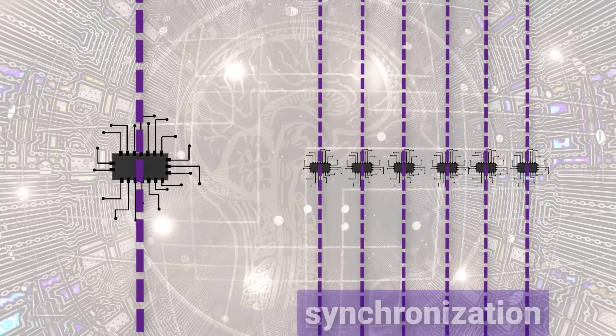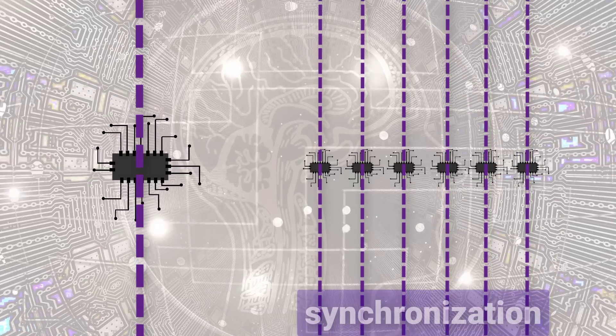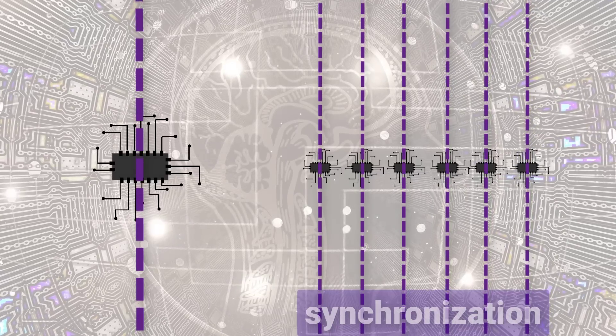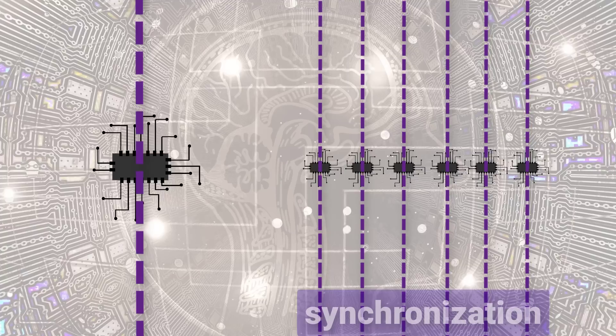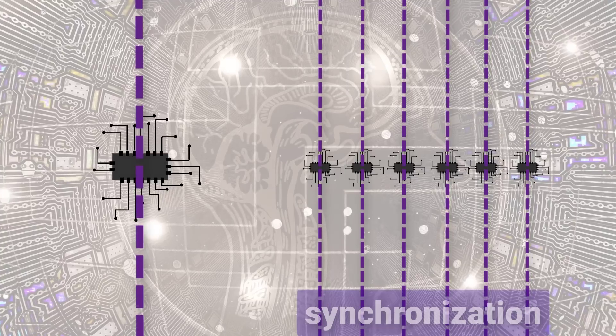CPUs typically have 4, 8, or 16 cores, while GPUs have potentially thousands of cores.